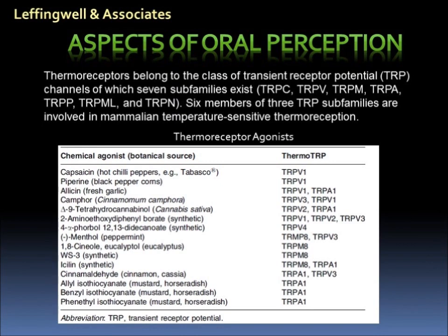This table gives examples of chemical stimuli that activate the various thermoreceptor channels. In general, cold chemicals such as menthol activate the TRPM8 channel, while hot chemicals like the isothiocyanates activate the TRPA1 channel. In the example of capsaicin, it activates the TRPV1 channel. As noted, some materials activate more than one TRP channel.